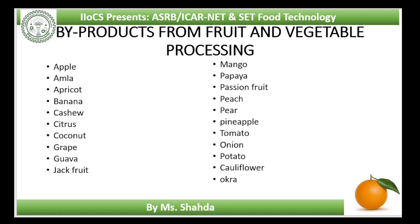Stalks are the main by-products in the pea processing industry, which can be used as animal feed. Peas is a vegetable crop important from an agricultural economy as well as nutrition point of view. Peas are highly nutritive, containing a high percentage of digestible protein along with carbohydrates and vitamins. It is an excellent food taken either as a vegetable or in soup, canned, frozen or dehydrated form. The winnings and pods are the main waste material from green peas and can be fed directly to animals, dried for animal feed ingredients, or used as compost.